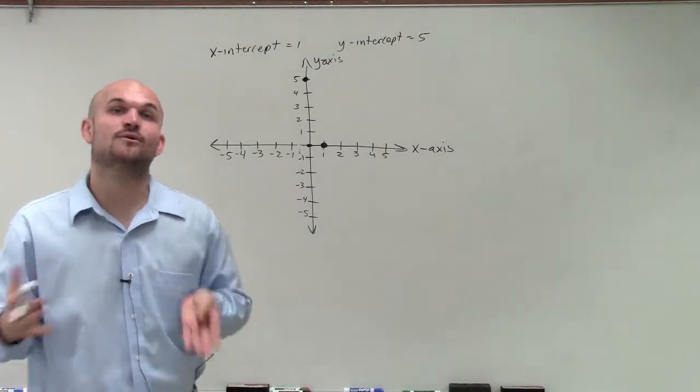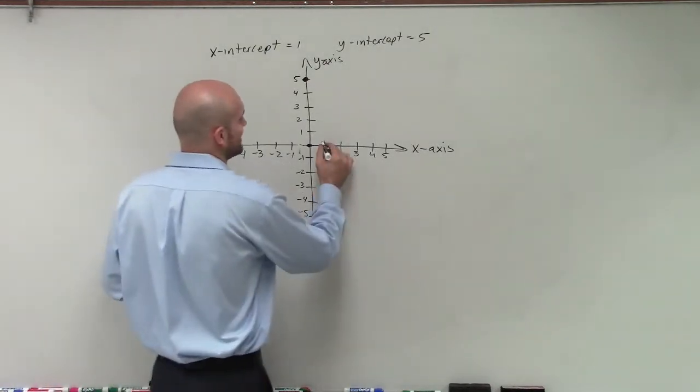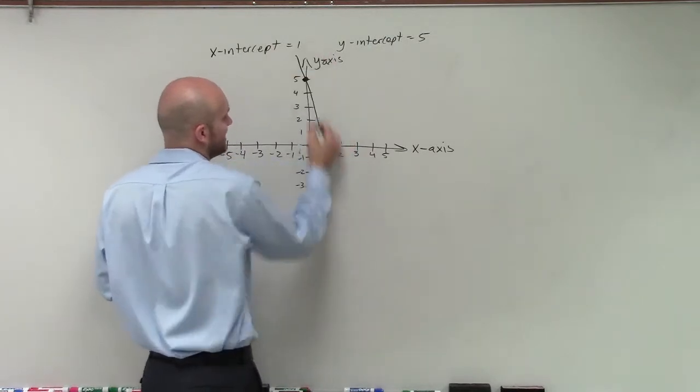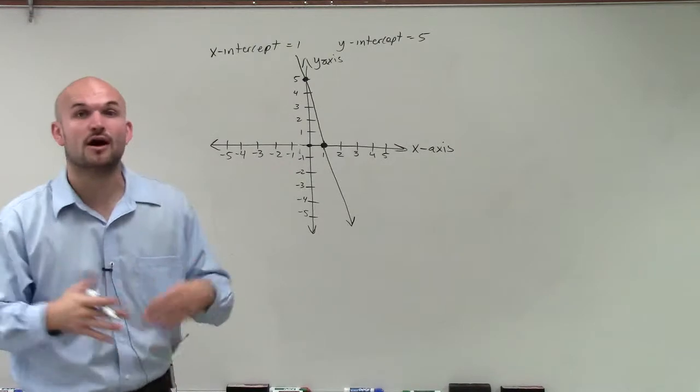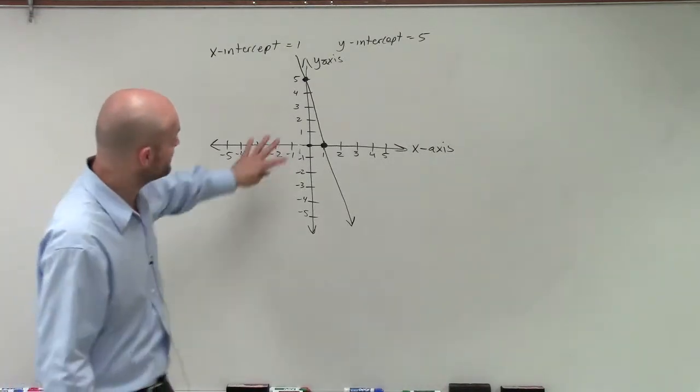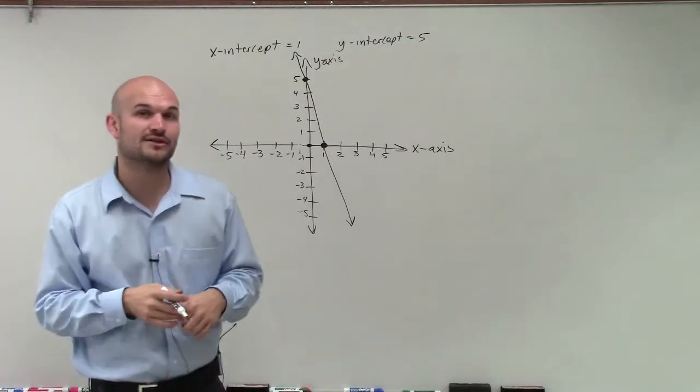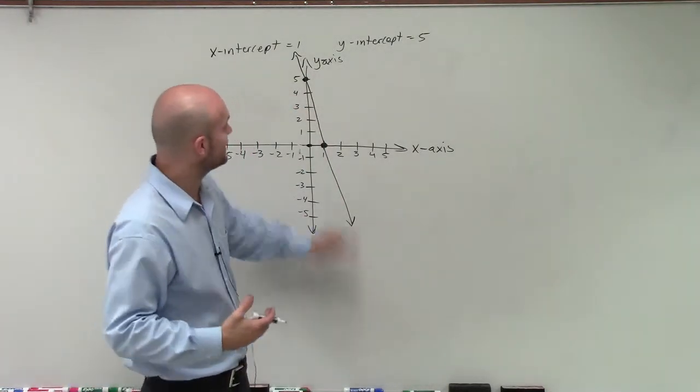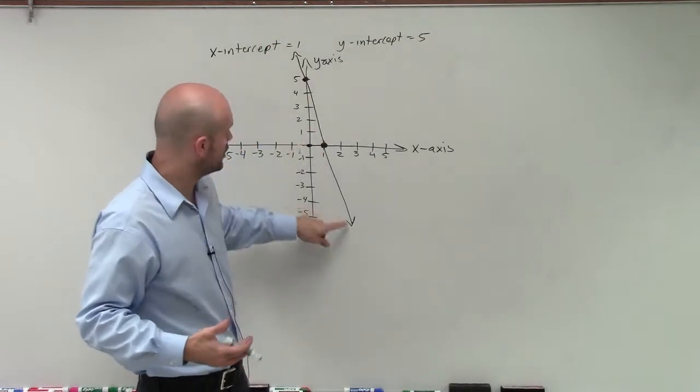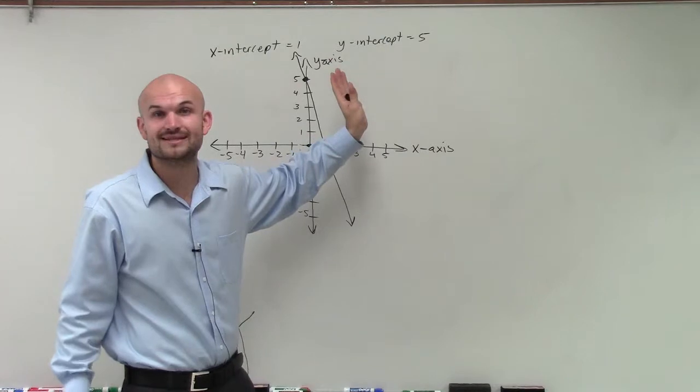So now that I've found the x and the y-intercept, to graph my line, all I simply need to do is connect these two points. Now, a line is going to be a set of infinitely many points. So even though we just know the two points where it crosses the x and y-intercept, the graph is going to continue infinitely in the negative direction and infinitely in the positive direction. So I put two arrows in there, and I connect them representing all the points that are going to make this line.